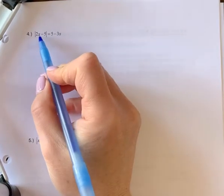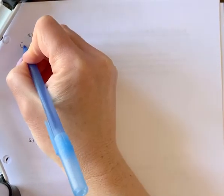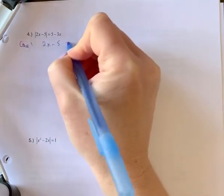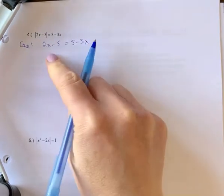Example 4, solving. So again, we're going to have two cases. In case 1, we're going to take the 2x minus 5 out of the absolute value brackets and keep it positive.